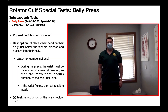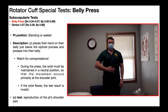Let's now talk about the belly press test. This is one of two commonly used special tests to assess whether somebody has a tear specifically in the subscapularis muscle. To perform this test, the patient is going to be either in standing or seated — I'm going to show it in standing right here. The patient then places the hand of their affected side on their belly just below the xiphoid process, with the palmar side of the hand in contact with the belly, and presses in as much as they can.